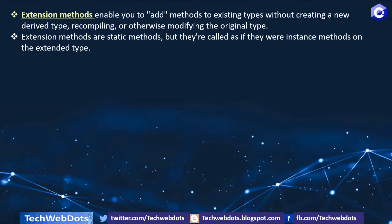According to Microsoft's definition, extension methods enable you to add methods to existing types without creating a new derived type and recompiling or otherwise modifying the original type. Here, type means any predefined data type, or you can consider array and list as well. Extension methods are static methods, but they are called as if they were instance methods on the extended type — meaning we just create any instance or object and by using dot notation we can call the extension method.